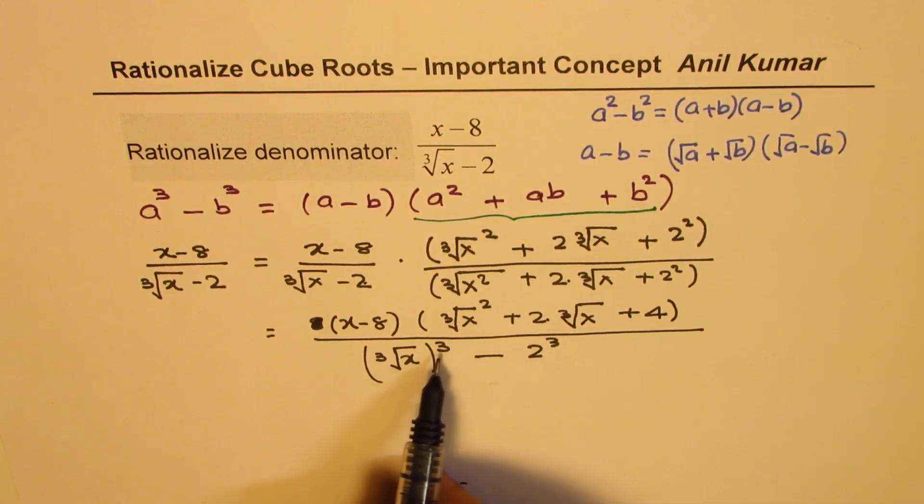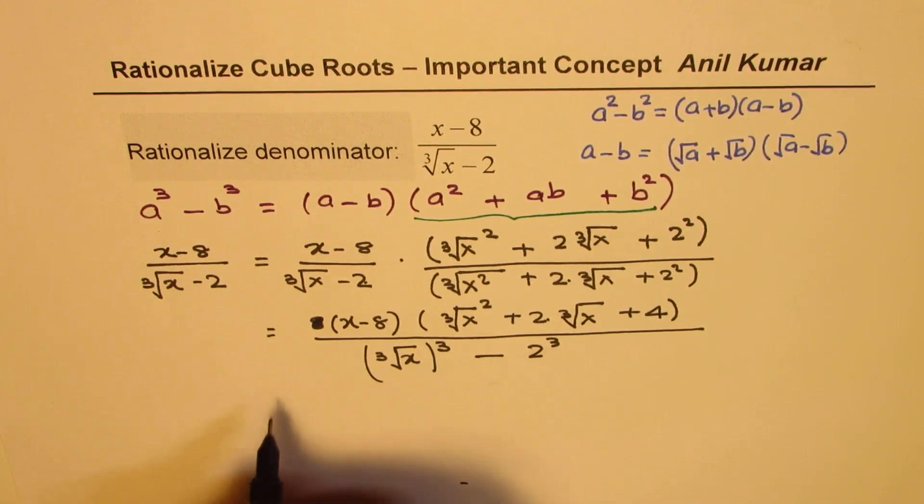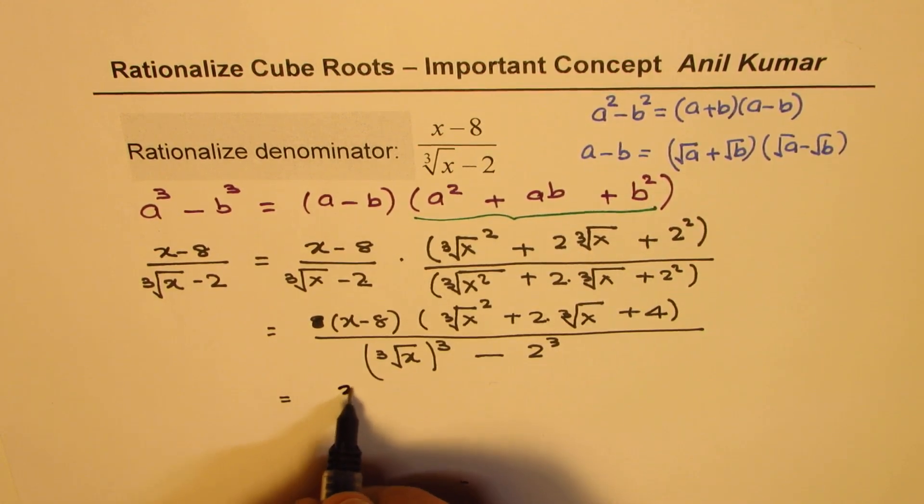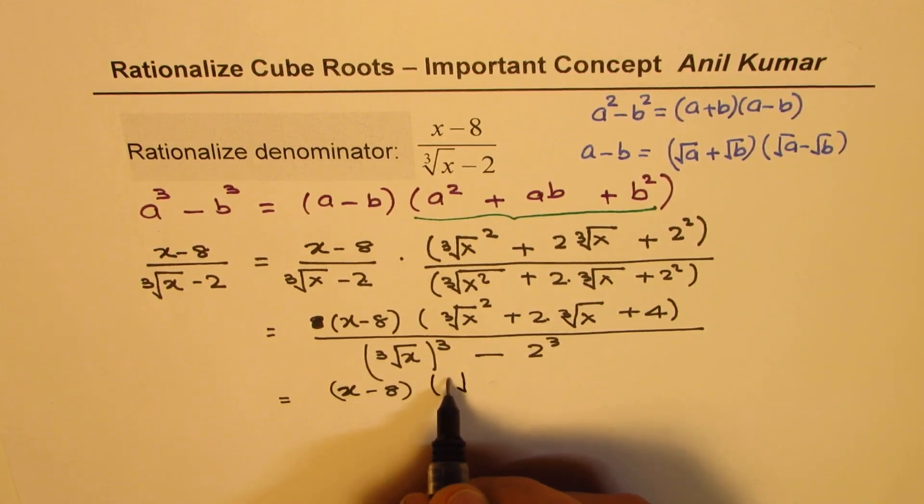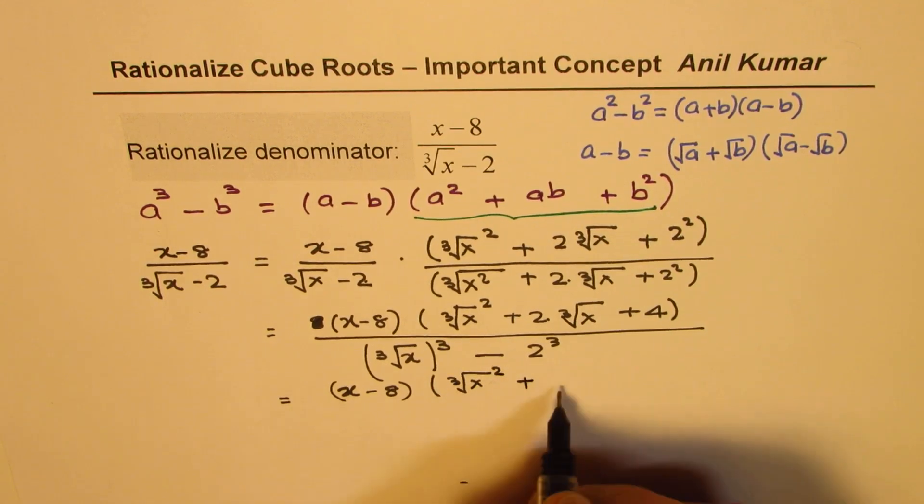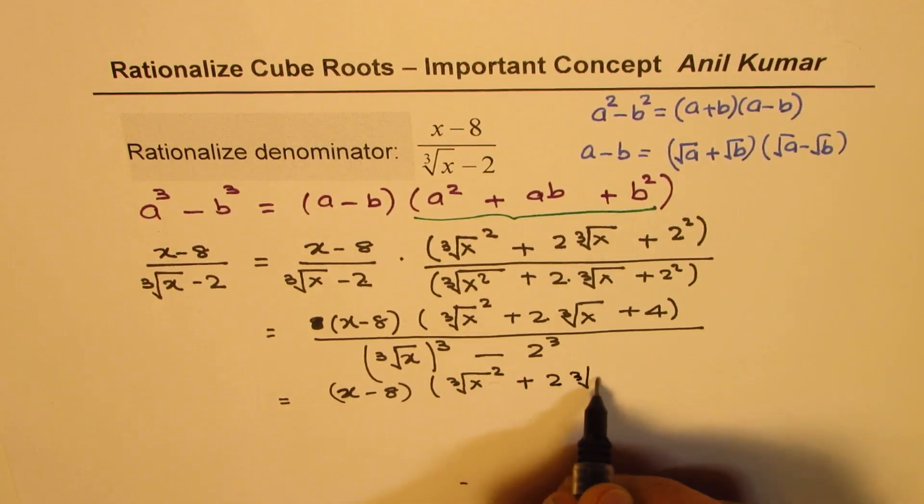Now, when you open this bracket, you get x and here you get minus 8. So, we have x minus 8 as a common factor in the numerator and denominator. So, they can be cancelled. That's the whole idea.